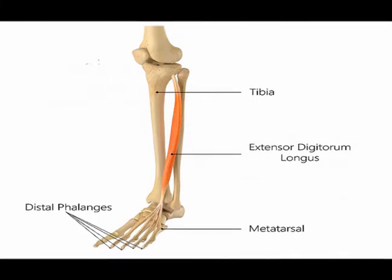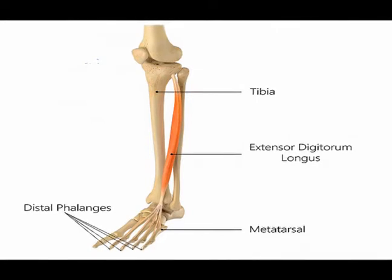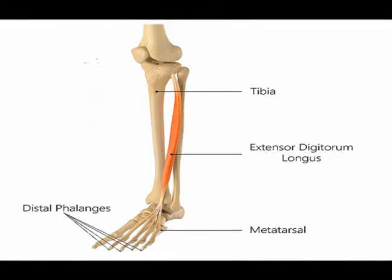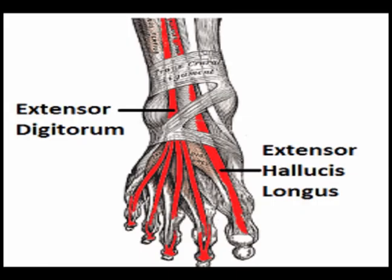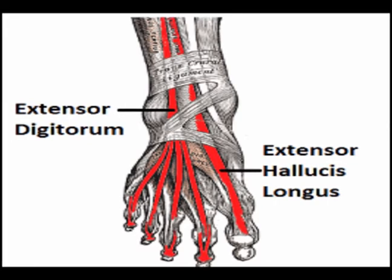The extensor digitorum longus is often abbreviated to the EDL. The EDL lies deep and lateral to the tibialis anterior muscle. Its origin is on the lateral condyle of the tibia, the medial surface of the fibula, and the superior three-fourths of the interosseous membrane. It inserts onto the dorsum of toes two through five at the middle and distal phalanges.